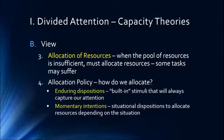With allocation policies, one concept is enduring dispositions — built-in stimuli that will always capture our attention. We talked in previous lectures about our name: it's one of those things we will always pay attention to, and it will automatically capture our attention. This is why when you say somebody's name, they will automatically direct their attention towards you. So if you're planning to gossip about them, don't use their name — it's a better way to save friendships.